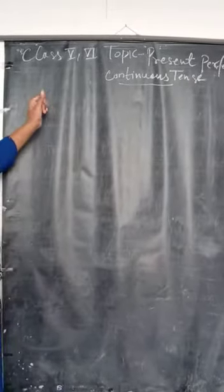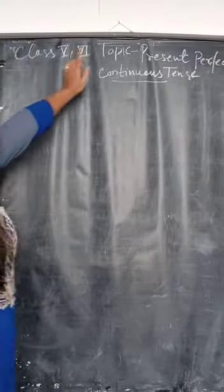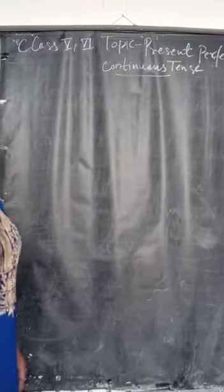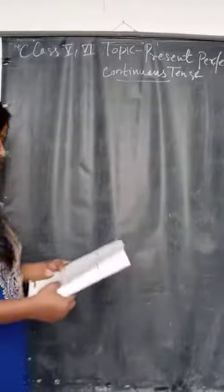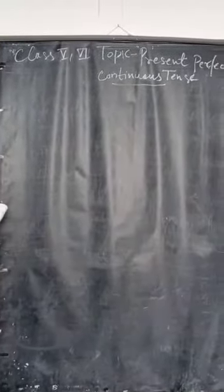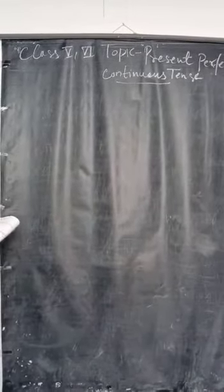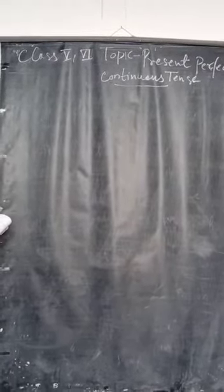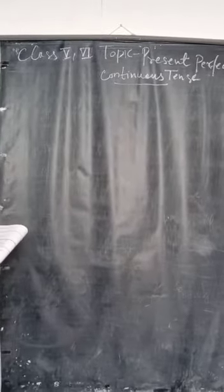Today we are going to learn about Present Perfect Continuous Tense. The Present Perfect Continuous Tense is used to talk about an action that started in the past and continued until recently or that continues into the future. We can use the Present Perfect Continuous Tense in affirmative, negative, and interrogative forms.